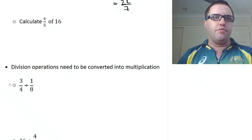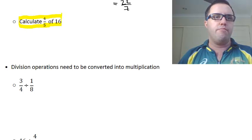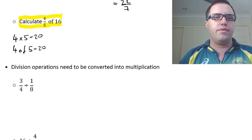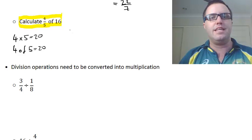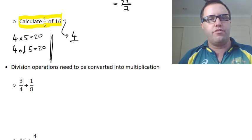Okay, now this is an important one to remember, this idea of calculate 4 fifths of something. So remember that when we had 4 times 5 is 20, that's the same as saying 4 lots of 5 is 20. So when we have 4 fifths of 16, that's telling us that we want 4 fifths times 16.